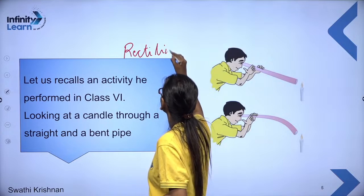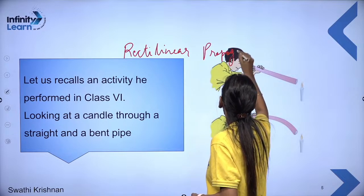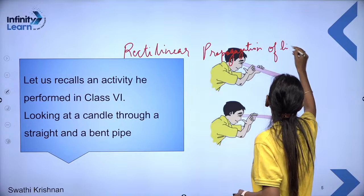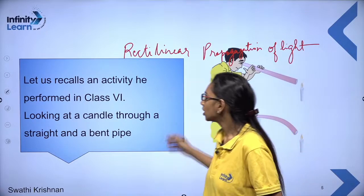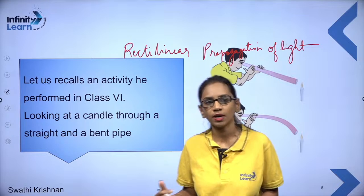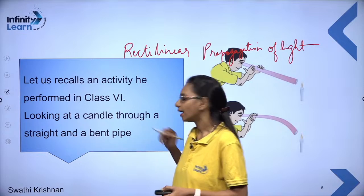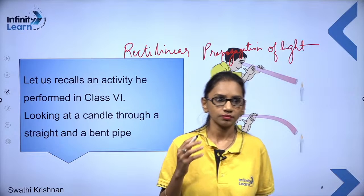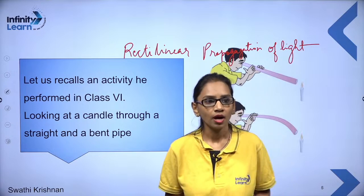We are going to study the rectilinear propagation of light. Let us recall it with the help of an activity — look at a candle through a straight pipe and then through a bent pipe. Through the straight pipe you can see the candle, and we also try to see the same candle through the bent pipe.